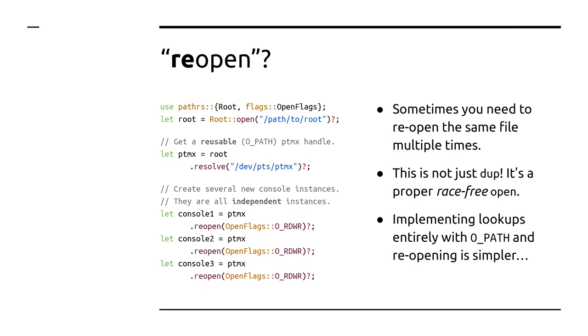The other slightly selfish reason is that it's a little bit easier to implement if you only have to deal with O_PATH when doing resolutions. So doing it in two steps is easier. That's the API — it's not very complicated. Getting all the security stuff right was a little bit complicated, but it's fairly easy to use, I would think.